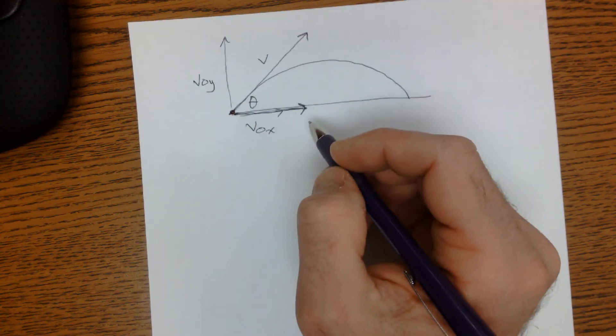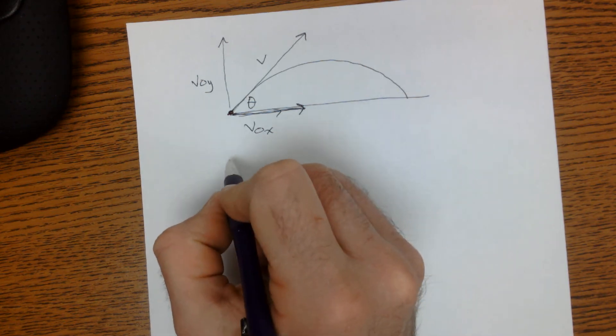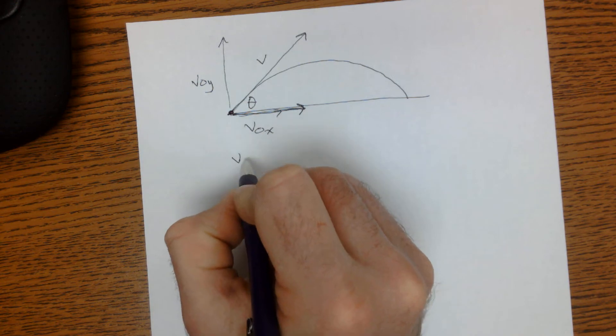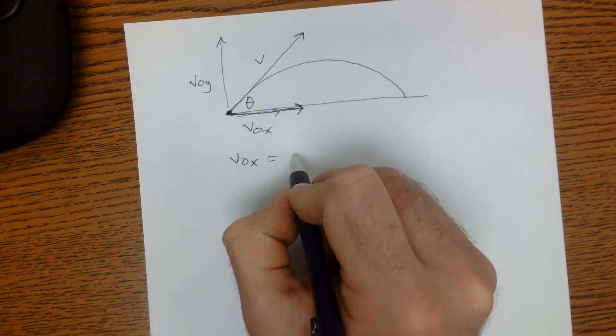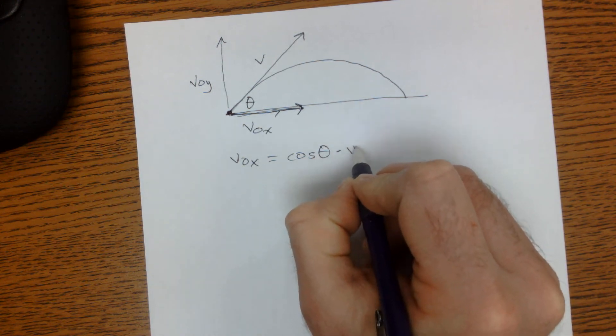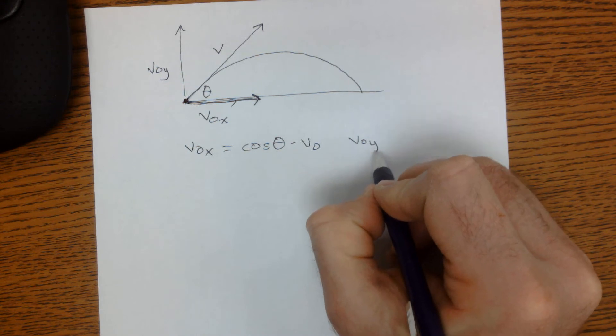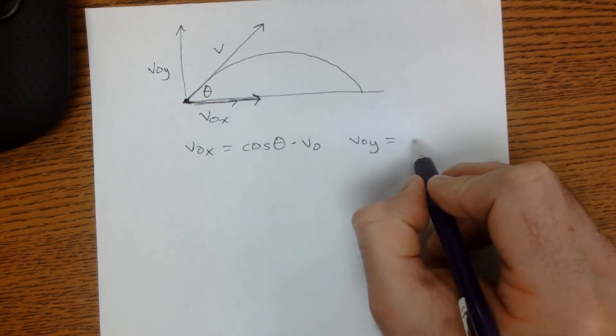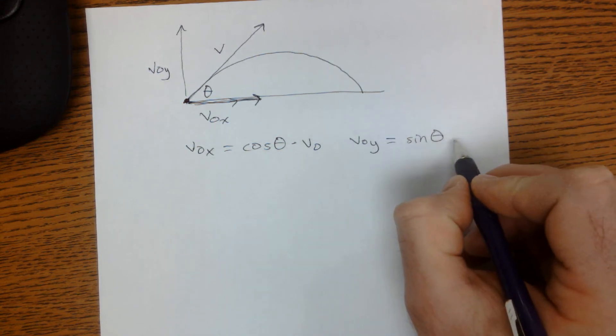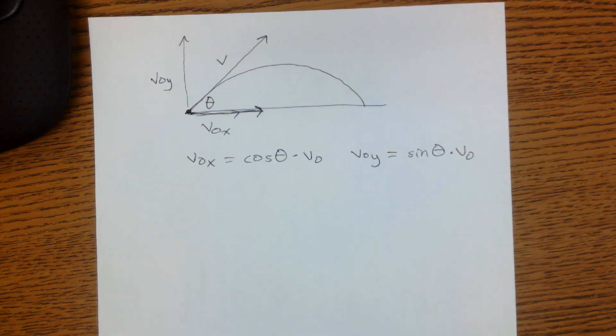We simply do our calculation. The initial velocity in the x direction is going to be equal to the cosine of the angle times the initial velocity, and the initial velocity in the y direction is going to be equal to the sine of theta times the initial velocity.